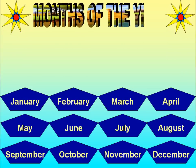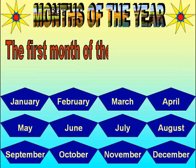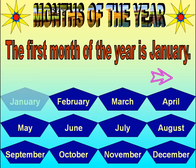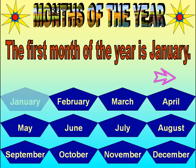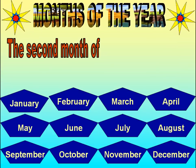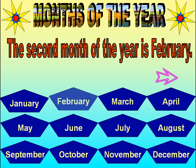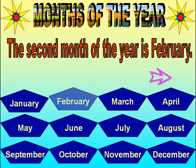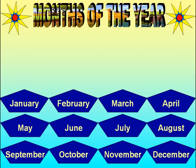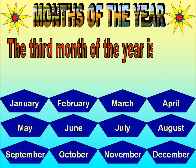Months of the Year. The first month of the year is January. The second month of the year is February. The third month of the year is March.